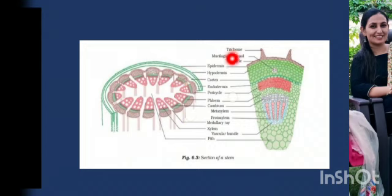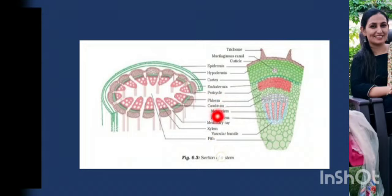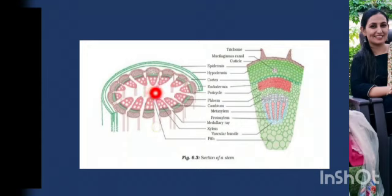The outermost layer is called the epidermis, followed by hypodermis, the cortical region, then endodermis. After endodermis, pericycle is present, then phloem, cambium, metaxylem, protoxylem, and medullary rays. Basically, the xylem and phloem together form a vascular bundle. In the centre of the stem, it is packed with cells called the pith.